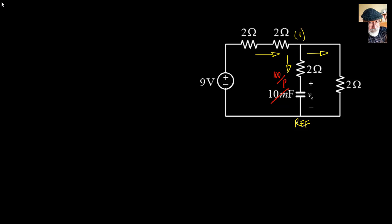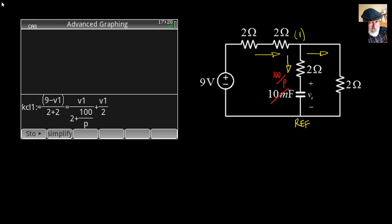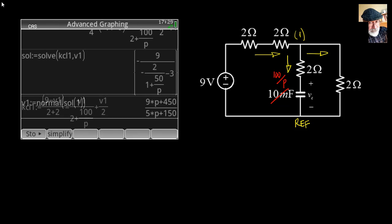In this case I control the circuit with only one equation: the KCL equation at the top node. Currents entering from the left: (9 − V1)/4. Currents leaving the node through the middle branch: V1 divided by the impedance of the branch — 2 in series with 100/p — plus the current on the far right: V1/2.